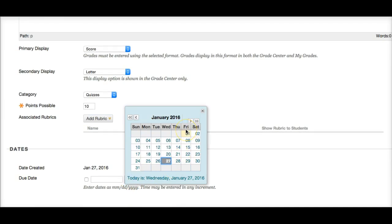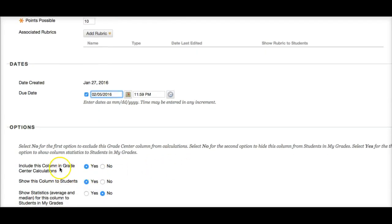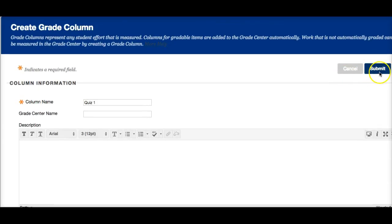And the due date. The first quiz is February 5th. Include this column in grade center calculations: yes. Show this column to students: yes. Show statistics. We can leave that at no. And submit.